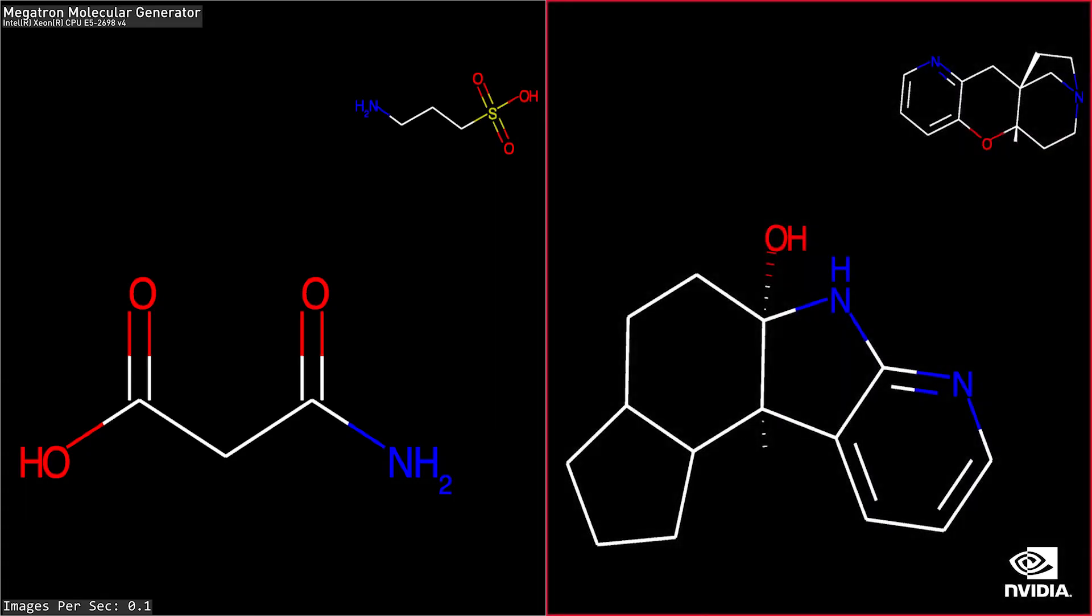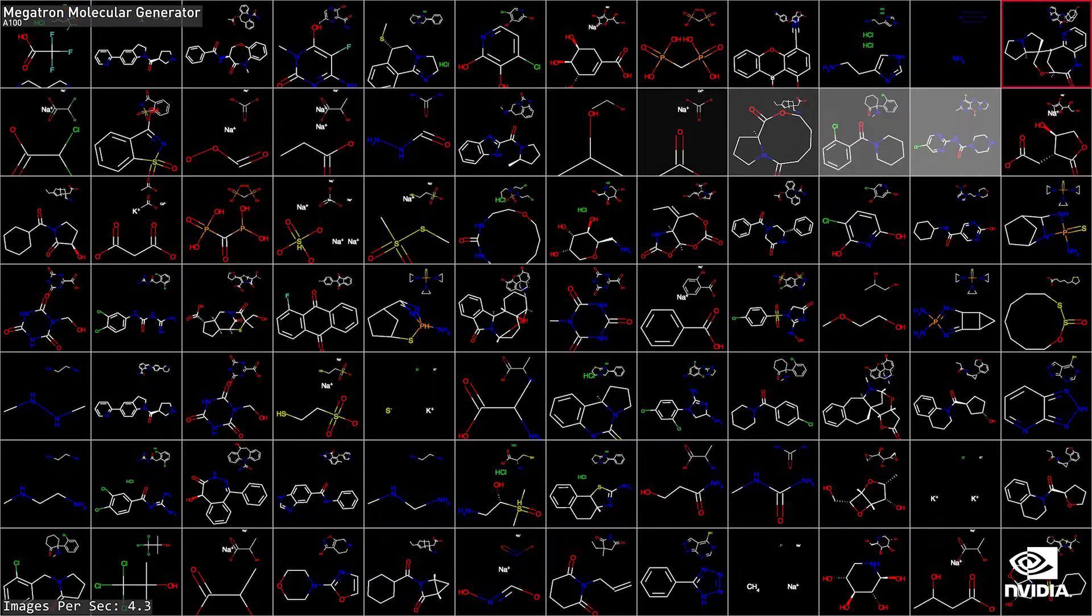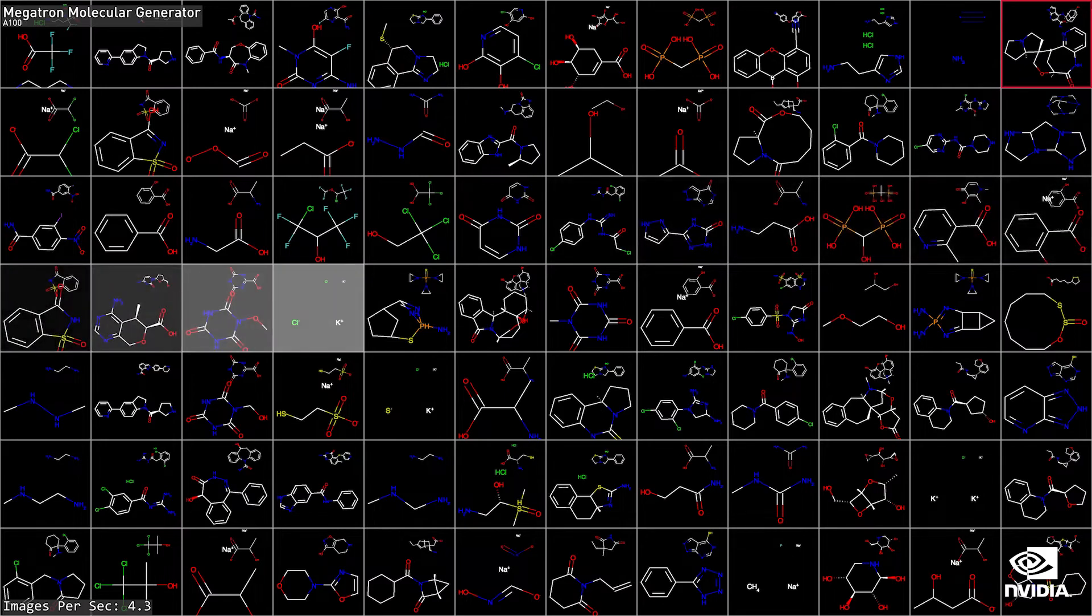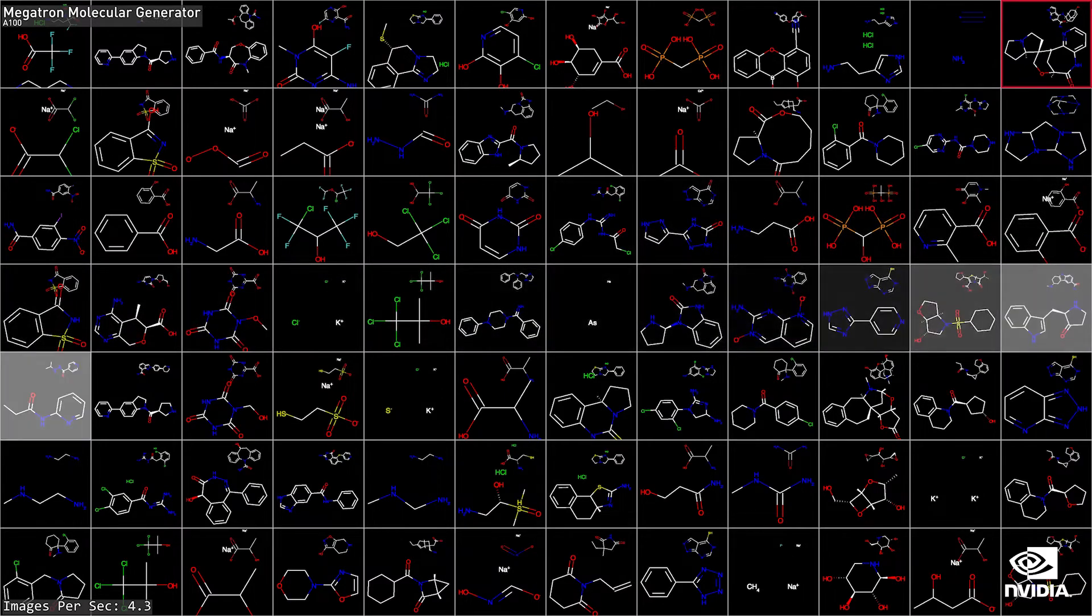It takes almost eight seconds to generate one molecule. On a single A100 with Triton, it takes about 0.3 seconds, 32 times faster.